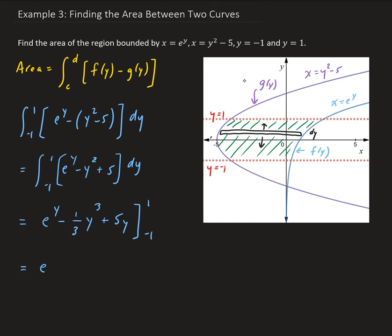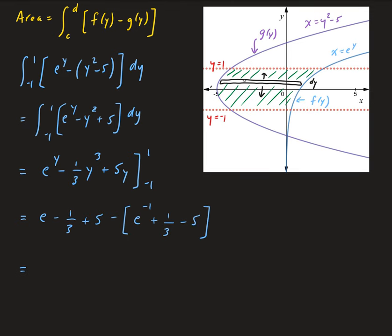All right, so we're going to get e to the first power, which is just e minus 1 third plus 5, minus e to the negative 1. We plug in negative 1 and cube that. We're going to get minus 1 times negative 1 third, so that's going to give us a positive 1 third and then minus 5. So we're going to get e minus 1 third plus 5, distribute the negative, so we get minus e to the negative 1 can be written as 1 over e minus 1 third plus 5.